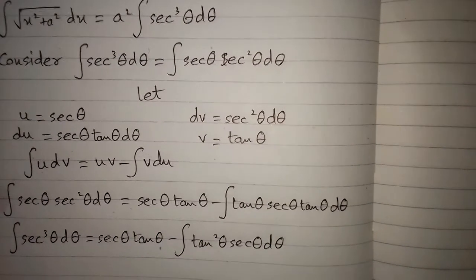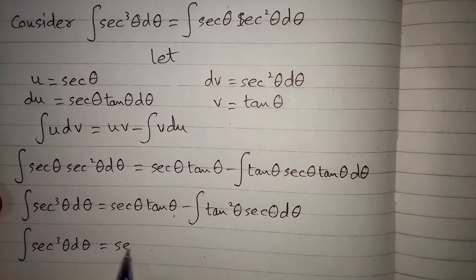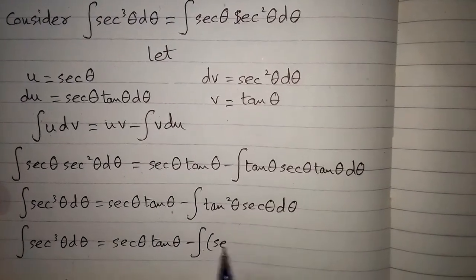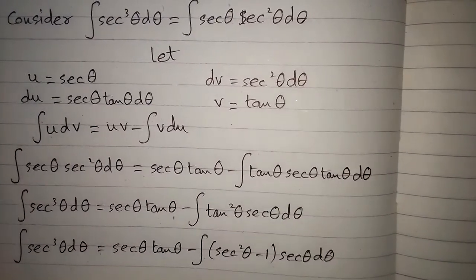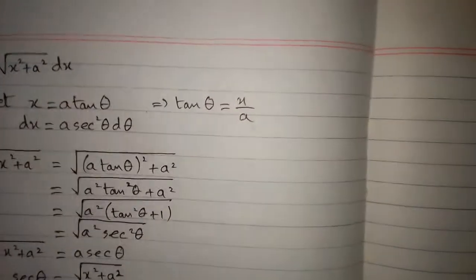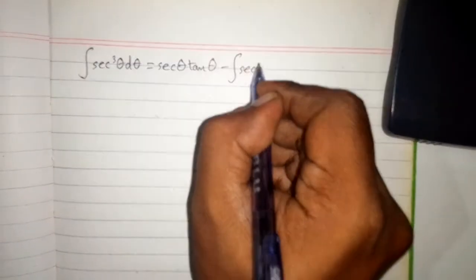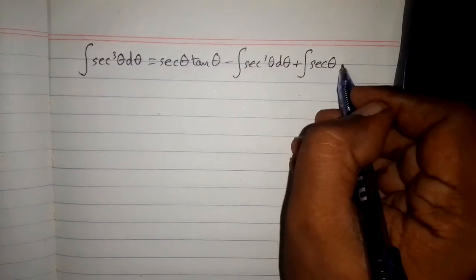We know that tan squared θ equals sec squared θ minus 1. So the integral of sec cubed θ dθ equals sec θ tan θ minus the integral of (sec squared θ minus 1) times sec θ dθ. Expanding this, we get sec θ tan θ minus the integral of sec cubed θ dθ plus the integral of sec θ dθ.